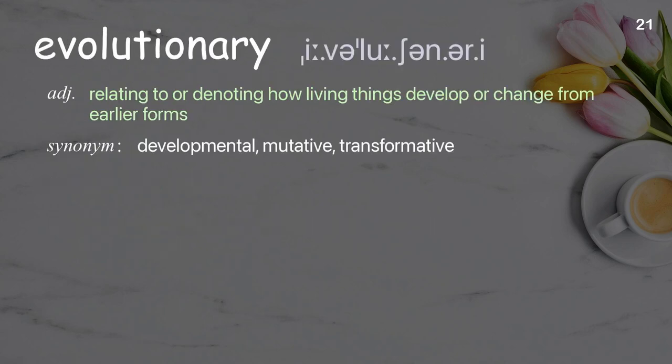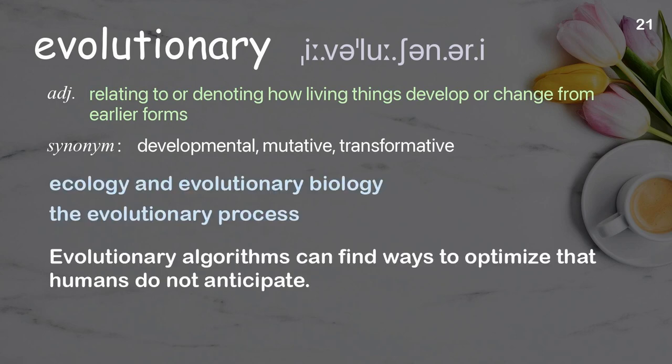Evolutionary: relating to or denoting how living things develop or change from earlier forms. Examples: ecology and evolutionary biology, the evolutionary process. Evolutionary algorithms can find ways to optimize that humans do not anticipate.